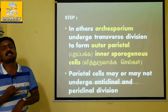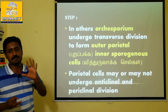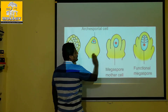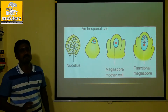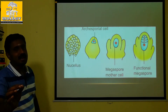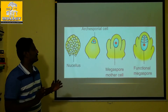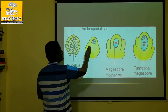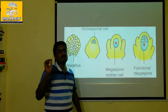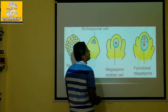So, the first step is the Archesporium, and the second step is the transverse division, producing the outer parietal cells. Normally these archesporial cells divide and Megaspore mother cells are produced. We have the outer parietal cells and the inner sporogenous cells. In some plants, archesporial cells directly become Megaspore mother cells.